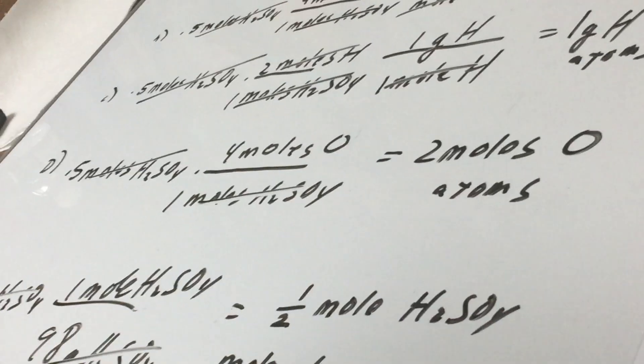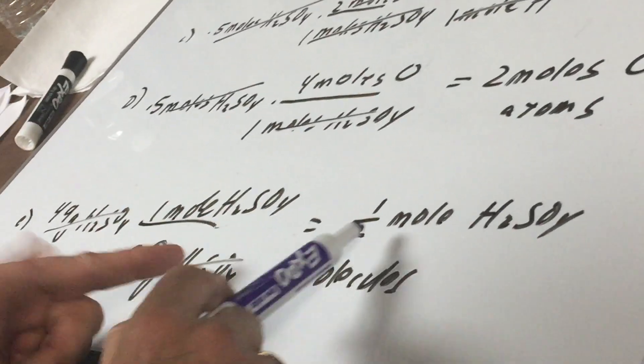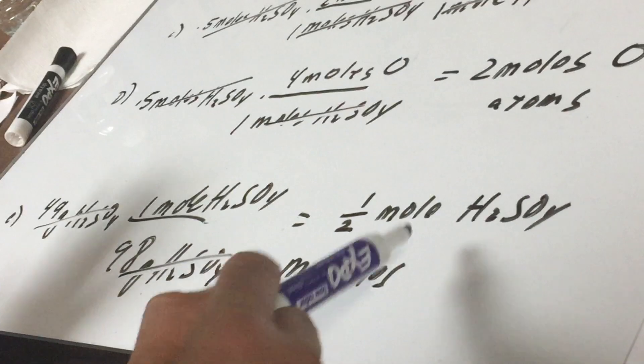E, is there a mole of molecules? Well, we already saw 49 grams. When you divide it by the weight, it was a half a mole of H2SO4 molecules. So there wasn't one mole of molecules. There was only a half a mole, the molecules being H2SO4. So the correct answer was choice letter D.